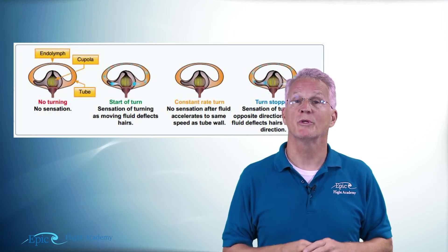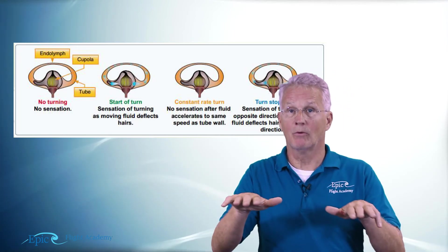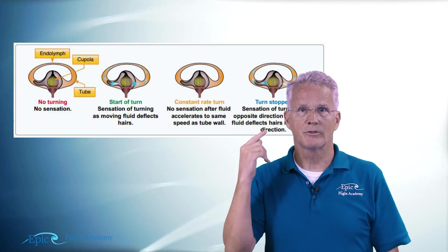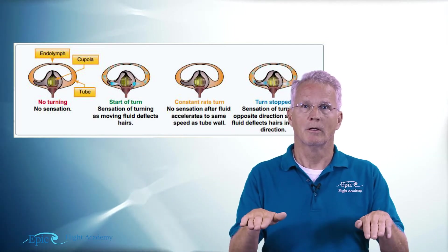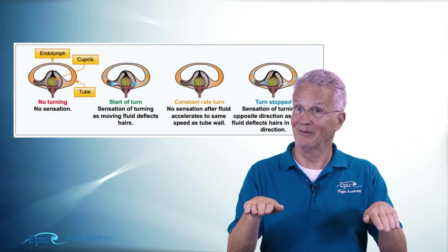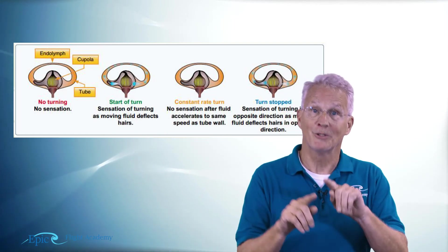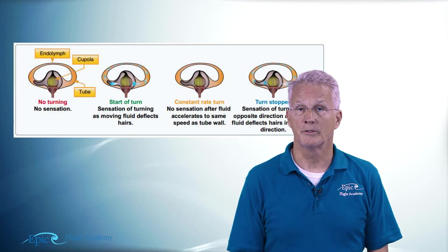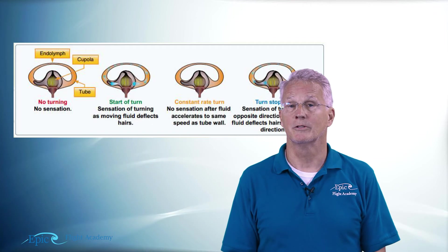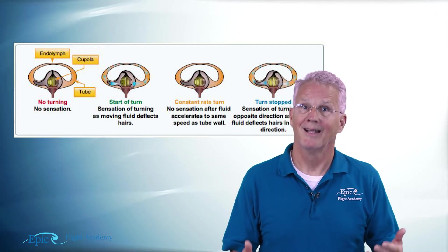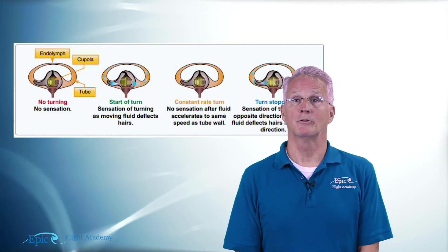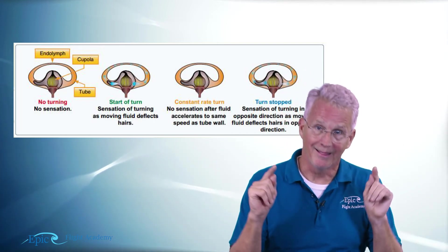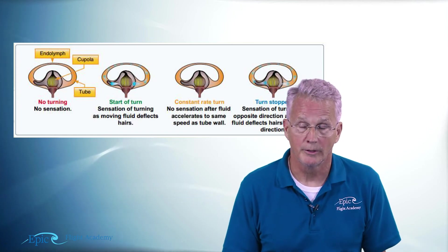Do you see the problem we're setting up? Once we stop that turn and roll out wings level, that endolymph starts to move again and it tells the brain we're turning — but we're not; we're actually level. The endolymph is moving, trying to convince the brain that we're turning. This can result in disorientation, and if that disorientation is incapacitating it can potentially lead to a loss of control — a dangerous situation. That's why we study the human ear and the semicircular canals, the cupula, and the endolymph.